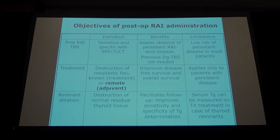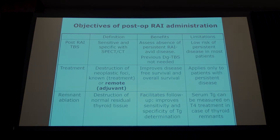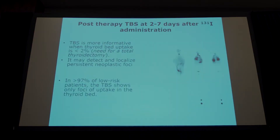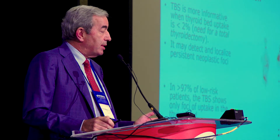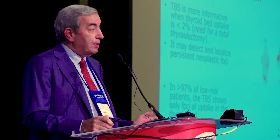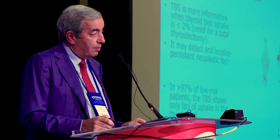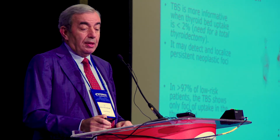Why do we give radioiodine postoperatively? There are three aims: one is to perform a total body scan postoperatively; the second is to treat neoplastic tissue; and the third is to ablate normal thyroid remnants. Starting with the post-therapy total body scan, which is very sensitive — in patients with low or intermediate risk it is normal in more than 97–98% of patients. The risk of distant metastases or persistent disease in the neck is very low by definition.